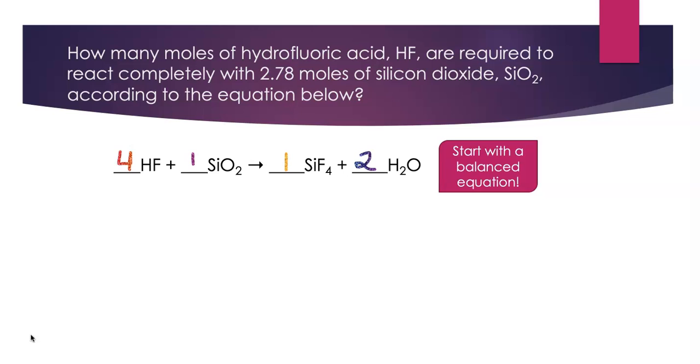Now let's go back and look at the problem. What are we solving for? What are we given? Well, we're given 2.78 moles of SiO2, and I want to know how many moles of HF I need. And we also need that mole ratio.